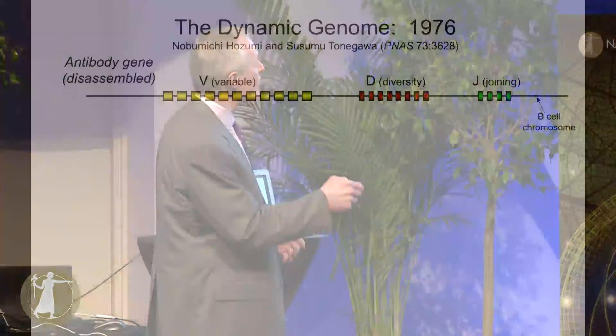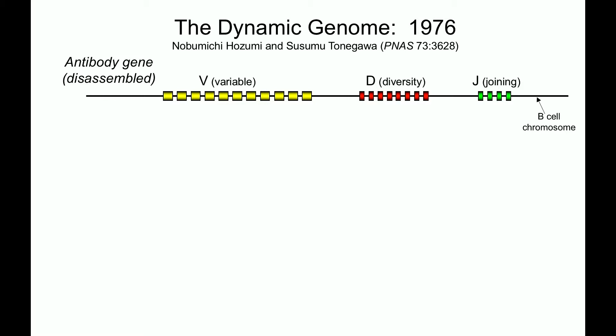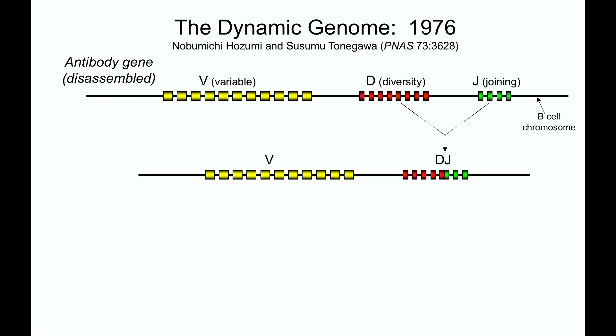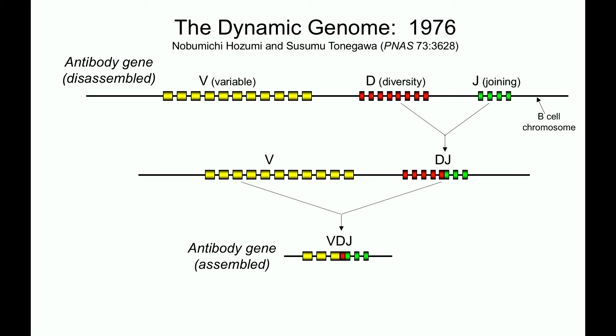These antibody genes start off as clusters of V gene segments, D gene segments, and J gene segments. As B cells develop, these genes have to be assembled in an irreversible rearrangement or recombination process that joins one of these D segments chosen at random to a J segment also chosen at random. Then one of the V segments is chosen to be joined to that DJ, and only then, with the chromosomes being rearranged, do you proceed.